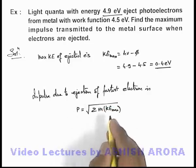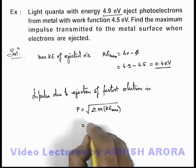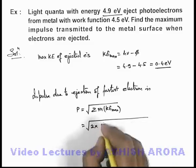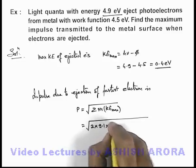As you know, if we know the kinetic energy, momentum we can calculate by using this expression. If we substitute the values, this will be twice the mass of electron, which is 9.1 times 10 to the power minus 31.